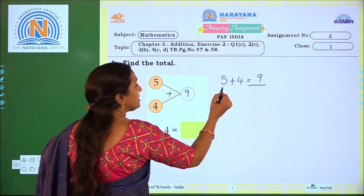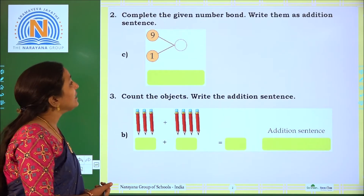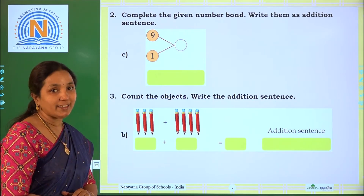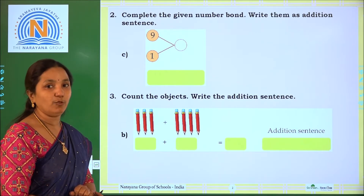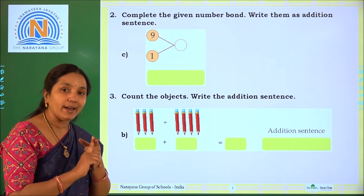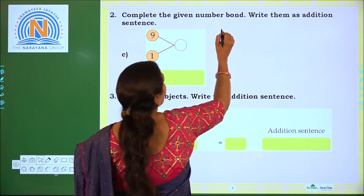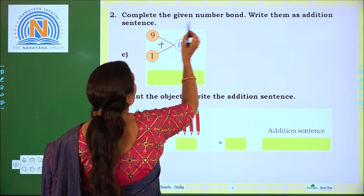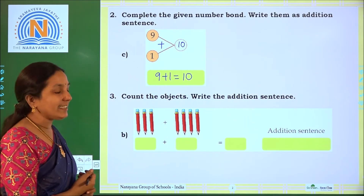So what is the addition sentence? 5 plus 4 equal to 9. Coming to next one: complete the given number line, write them as addition sentence. The numbers given here are 9 and 1. When we are adding 9 and 1, what do you get? The next number after 9 is 10. So 9 and 1, you will get 10. 9 plus 1 equal to 10. What is the addition sentence? 9 plus 1 equal to 10.